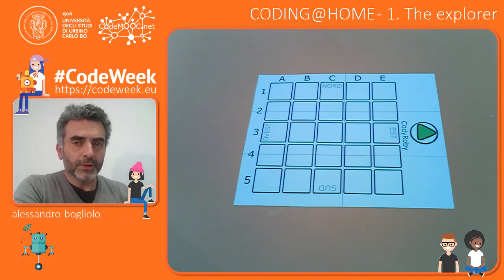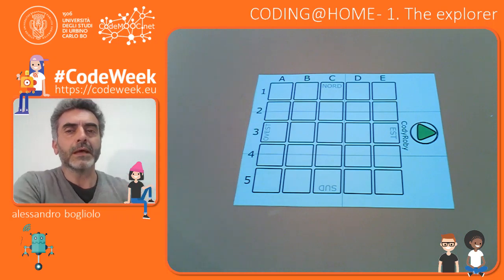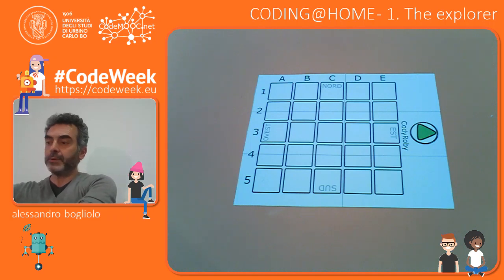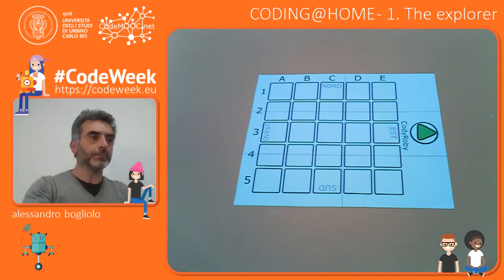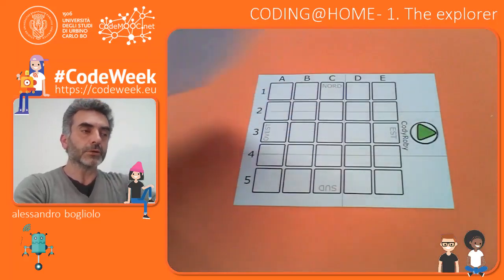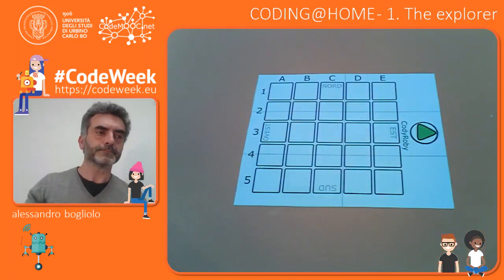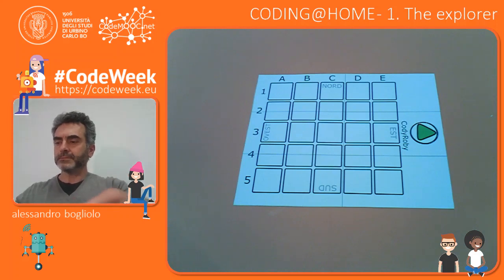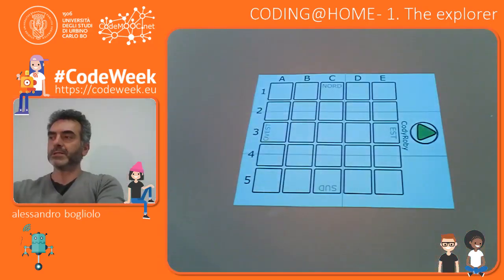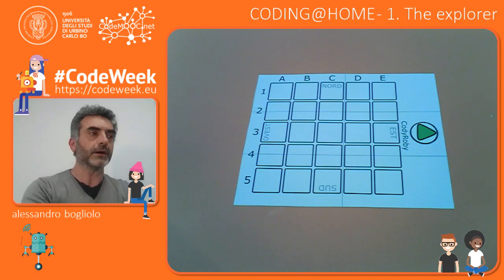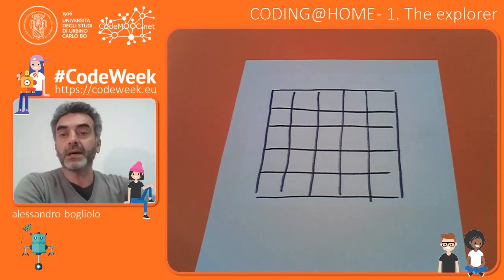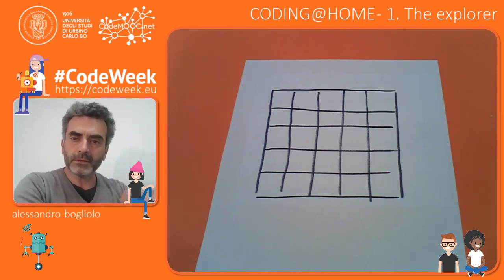But first of all, let me tell you something about the checkered board that you find here. I printed it from the web. Here is the original paper and as you can see I had to cut it along the edges in order to obtain this one. But there is also another sheet of paper that I printed out and I'll show it to you in a moment. But before moving ahead, I'd like to point out that you could use any other checkered board, like this one, which is nothing but a grid drawn by a marker on a sheet of paper.